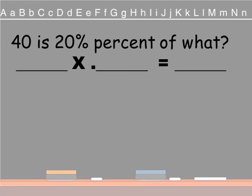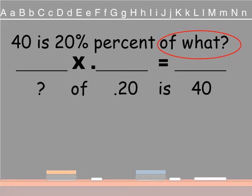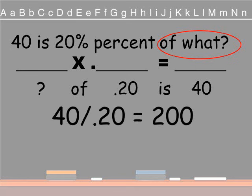So now here's another question. 40 is 20% of what? So now this time we're looking for the principal amount, the original amount, because the of gives us that little hint. So we're going to fill it in. Question mark, we don't know the original, times .20 is 40. And so we're going to write it out mathematically.